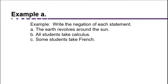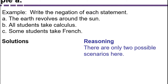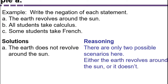We might be asked to write the negation of a statement. Starting with part A: The earth revolves around the sun. There are only two possible scenarios — either it does or it doesn't. So the negation of 'the earth revolves around the sun' is 'the earth does not revolve around the sun.'